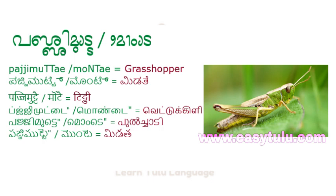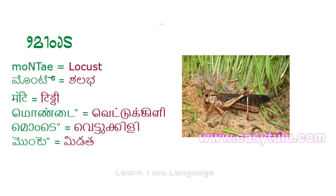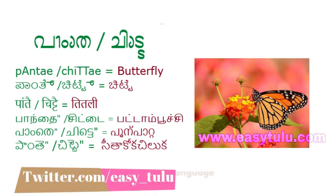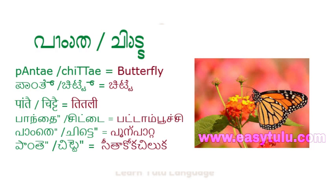Munte means Locust. Panthe or Chitt means Butterfly.